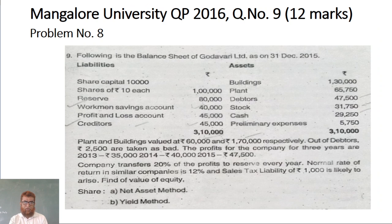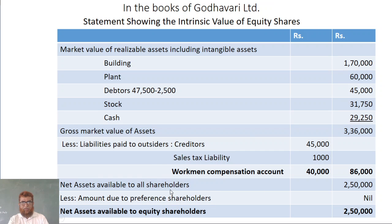Under the net asset method, the adjustment items are: building 1,70,000; plant 60,000. Debtors 47,500 minus bad debts 2,500 equals 45,000. Stock is 31,750, cash is 39,250. Total gross market value of assets comes to 3,36,000.